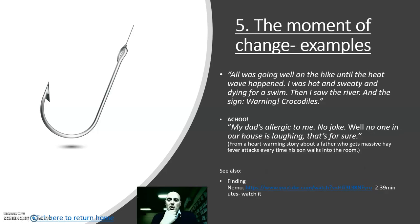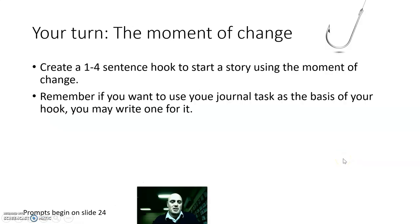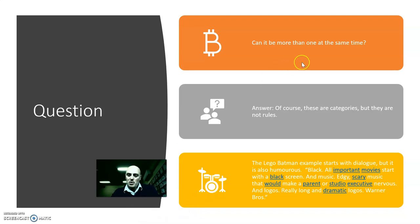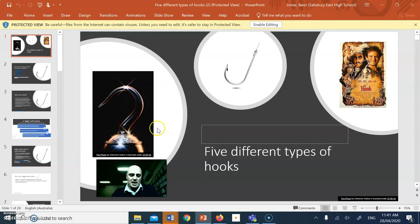An example: 'All was going well on the hike until the heat wave happened. I was hot, sweaty, and dying for a swim. Then I saw the river — and the sign warning: crocodiles.' Or from a book: 'My dad's allergic to me — no joke. Well, no one in our house is laughing, that's for sure' — a story about a boy whose father gets massive hay fever attacks every time his son walks into a room. You can also watch the opening of Finding Nemo, where Nemo's life changes when his mum is killed. These techniques can overlap — they're categories, not rules. Use the prompts provided to guide your writing.